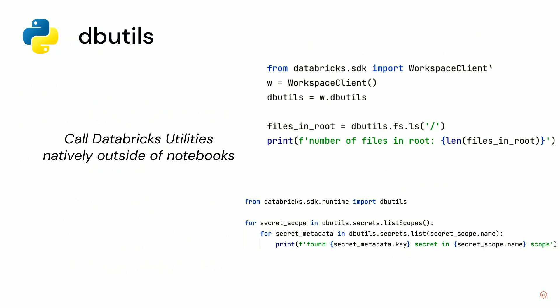DButils in the Python SDK were introduced so you can more easily migrate notebooks that use DButils to DBConnect V2. You can also use the DButils implementation from Python SDK in your unit tests. We support DButils FS, except mounts and secrets.